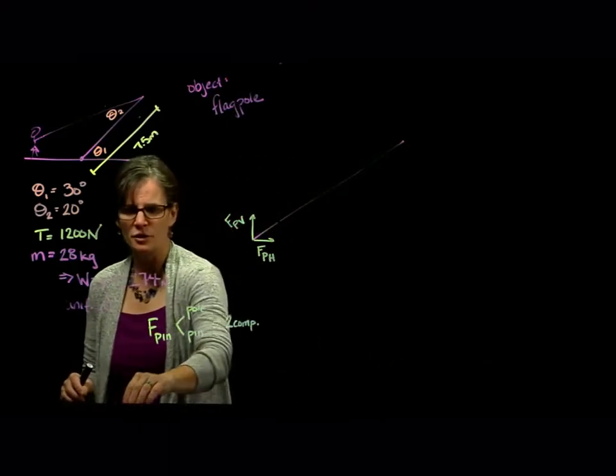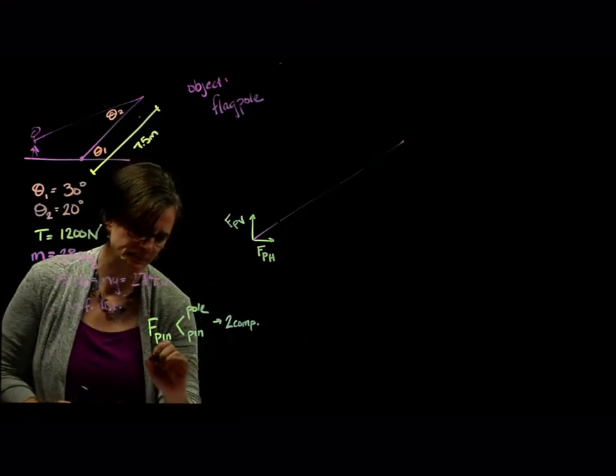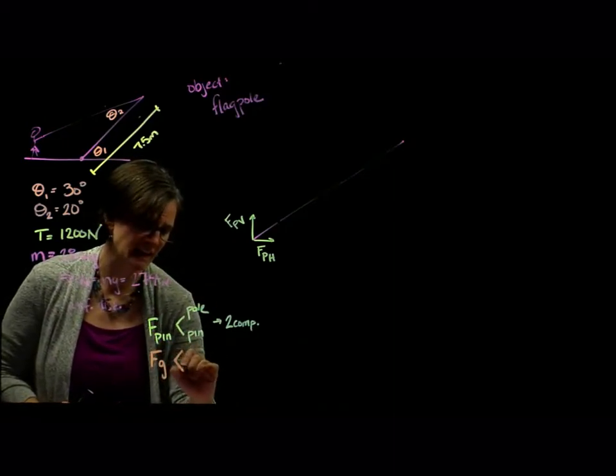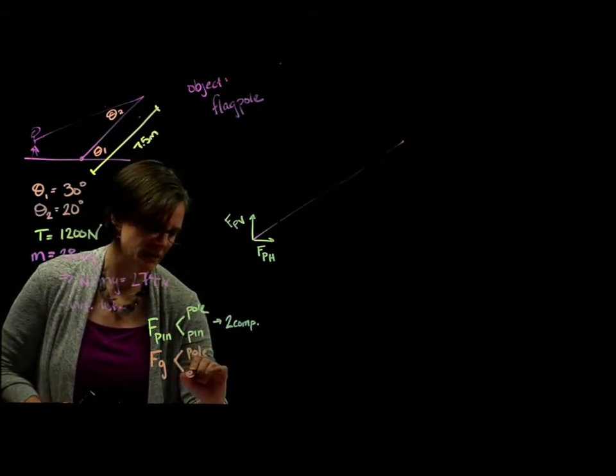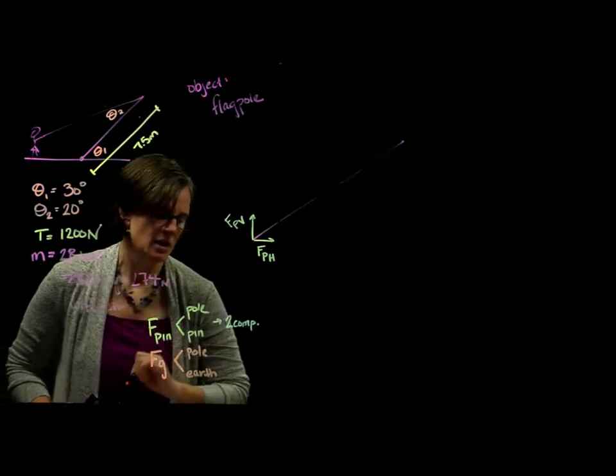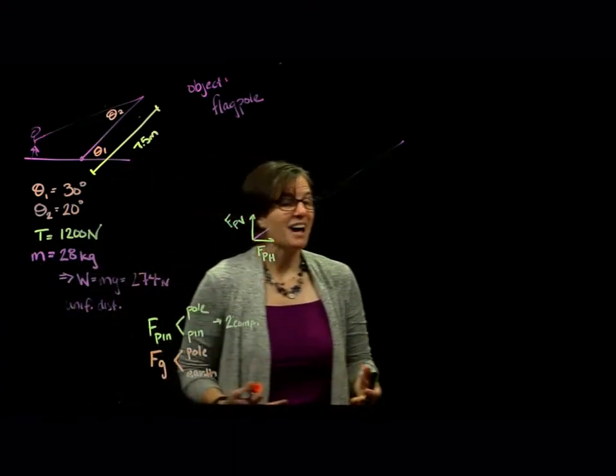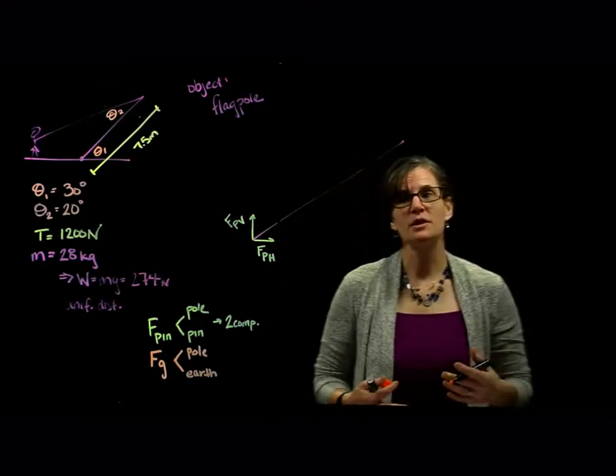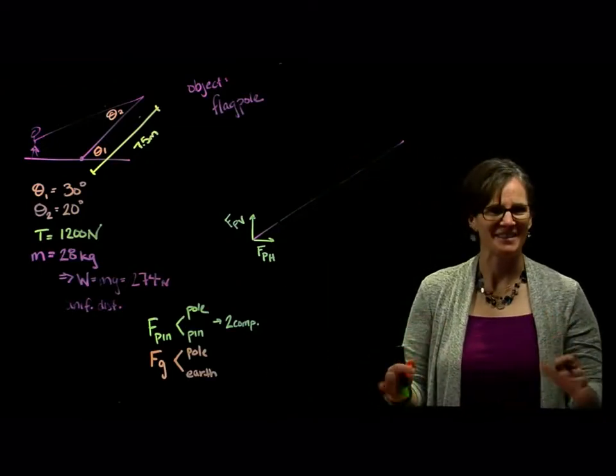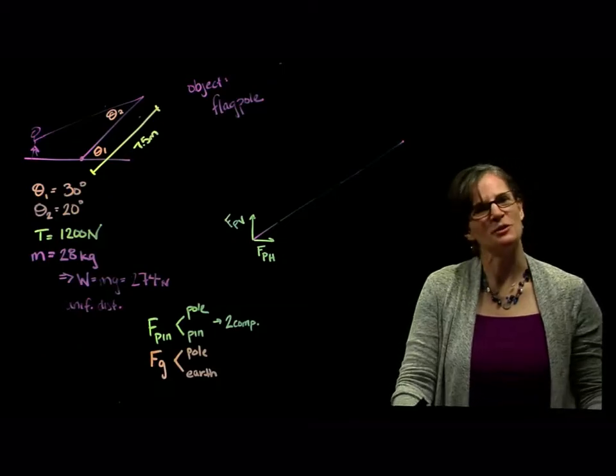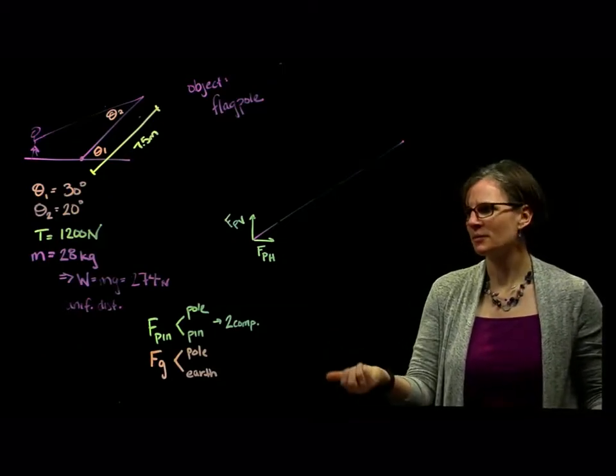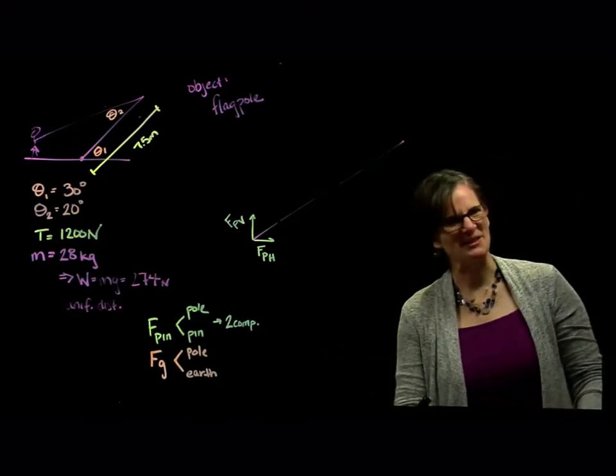All right, what's another interaction? We know that there's the force of gravity. Well, that acts between the pole and the Earth. The force of gravity acts at the center of mass. So what's the center of mass of a uniformly distributed object? Well, the center of mass is at the geometric center.